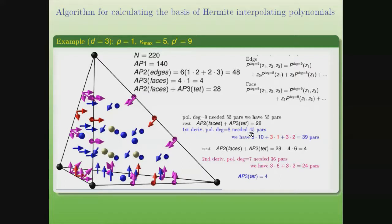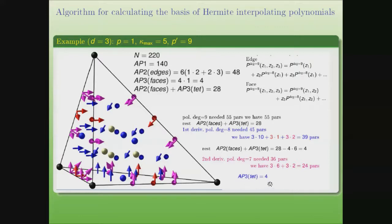Six parameters are needed. We obtain the first derivative at six points on the side of the tetrahedron. So we have four conditions to determine the auxiliary polynomials of the third and second type. For the second derivative, a polynomial of degree 7 needs 36 parameters but we have 22 — not enough parameters. The auxiliary polynomials of the third type therefore contain four polynomials.